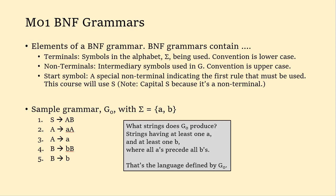Non-terminals are intermediary symbols that are getting you towards the string, that are getting you towards the terminal. A string is going to be a list of terminals, and along the way you might have some placeholders. The convention for non-terminals is to use uppercase. And then you've got a special non-terminal called the start symbol that indicates the first rule you have to use — it's showing you what your string looks like initially. Think of it like the main method in C or Java.